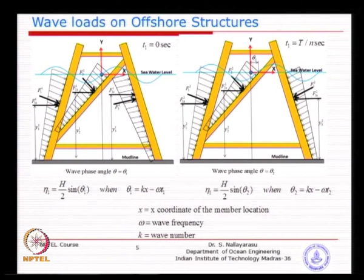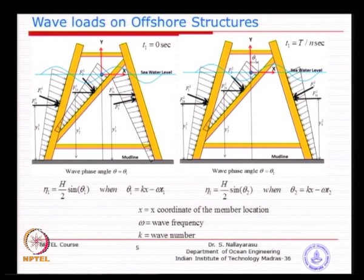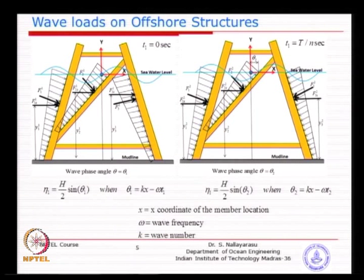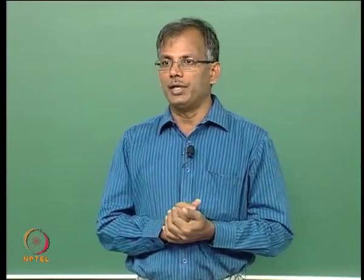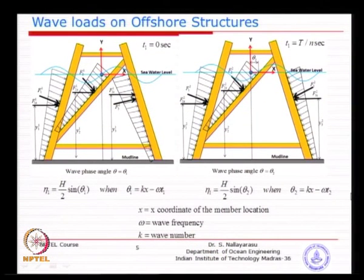If you have understood the single element case, we can move on to a multiple-element structure - the procedure is exactly the same. There is no big difference except that before going to the second time step, you need to complete the whole structure. Divide each member into several sub-elements, do a computation for each member, keep it aside, then go to the second member and do the same. When you do this for the whole structure, sum all elements into one force - that is the horizontal maximum force for one point on the wave cycle. Then go to the next time step incrementing t equal to 0 to t divided by n seconds.